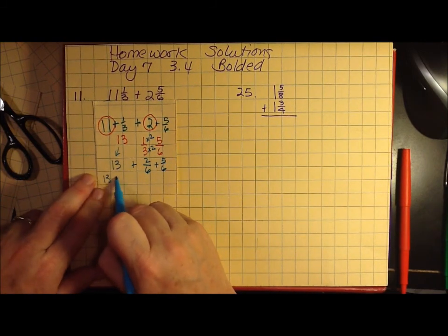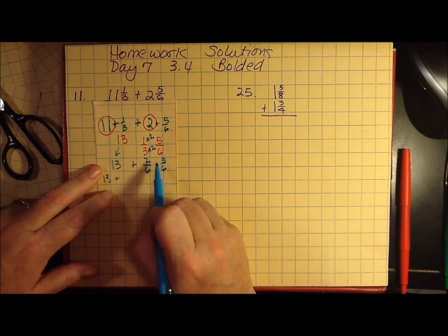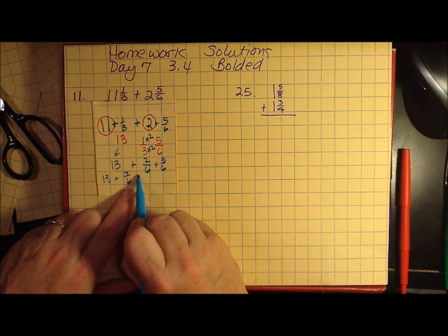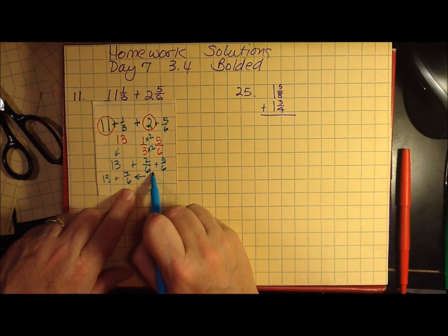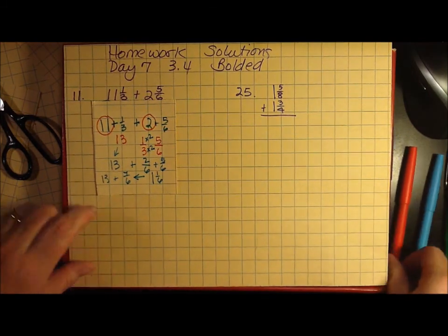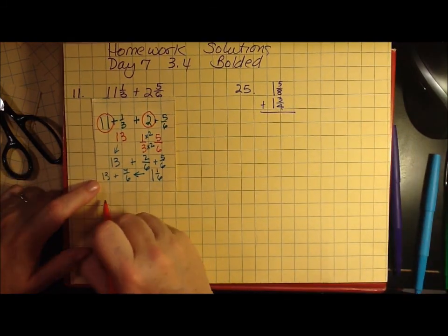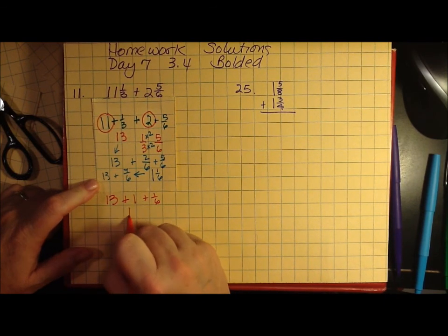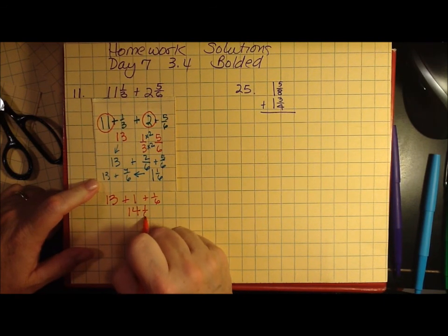13 plus 2 plus 5 is 7. That's seven-sixths. I can convert seven-sixths into 1 and one-sixth. So my total for this would be 13 plus 1 plus one-sixth or 14 and one-sixth.